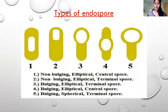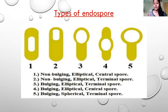These are the types of endospore — there are five different types. You can see in this picture the different positions as well. First, non-bulging elliptical central spore. Elliptical means somewhat elongated — a circle stretched into an oval shape. Second, non-bulging elliptical terminal spore. Third, bulging elliptical terminal spore. Fourth, bulging elliptical central spore. And fifth, which is different from the other four — it has a spherical shape.